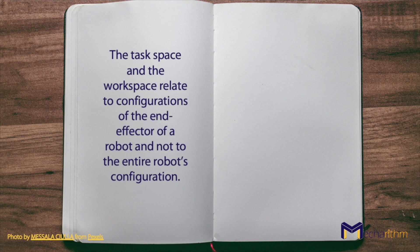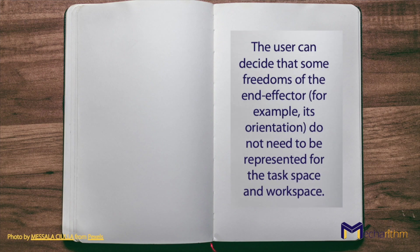To summarize today's lesson, let's see some important notes about the task space and the workspace. The task space and the workspace relate to configurations of the end-effector of a robot and not to the entire robot's configuration. The user can decide that some freedoms of the end-effector, for example its orientation, don't need to be represented for the task space and workspace.